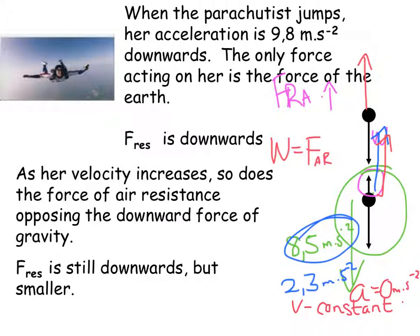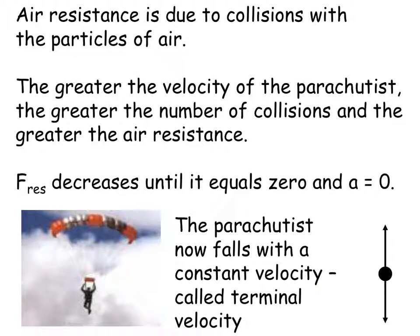As her velocity increases, so does the force of the air resistance opposing that downward force. Air resistance results because of collisions with the particles in the air. The greater the velocity of the parachutist, the greater the number of collisions and therefore the greater the air resistance, until the acceleration is zero. The parachutist then falls with a constant velocity and we call that velocity terminal velocity.